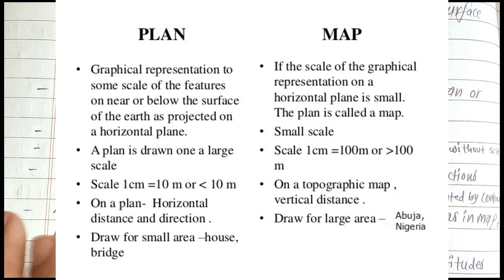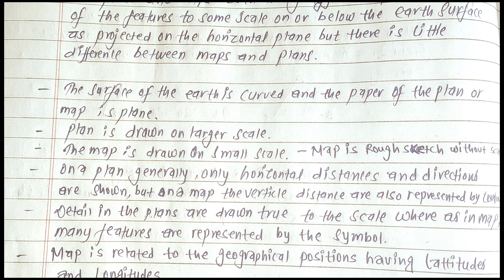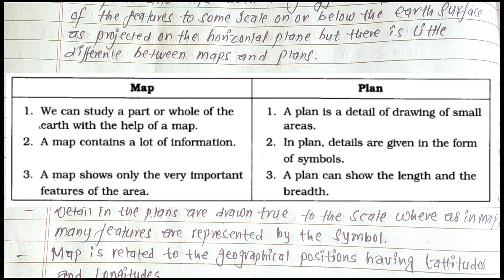The surface of the Earth is curved, whereas the paper of the Plan or Map is plane.